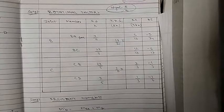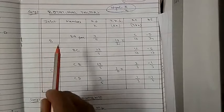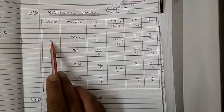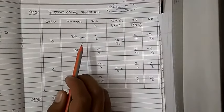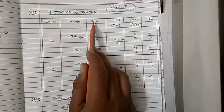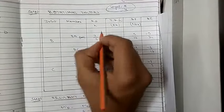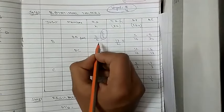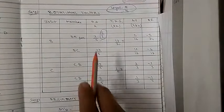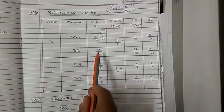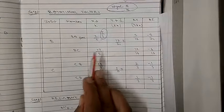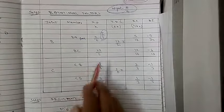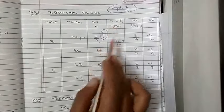Next, we calculate the rotational factors. We consider joint B with members BA and BC, and joint C with members CB and CD. The beam is fixed at both ends. Relative stiffness K equals I/L, so for BA it is I/6. For BC, the moment of inertia is given as 2I, so K equals 2I/5. The total relative stiffness at B is I/6 plus 2I/5 equals 17I/30.